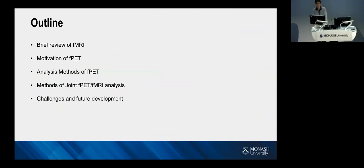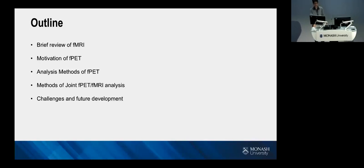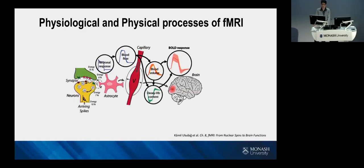Firstly, I will give a brief review of functional MRI. Then the motivation of PET — I will talk about why we need fPET, how it works, and what the fPET signal looks like. Then I will bring in some analysis methods of PET, especially focusing on the data-driven methods developed by our group. I will then move to analysis methods for joint fPET and fMRI. Finally, I will discuss some current challenges and future development.